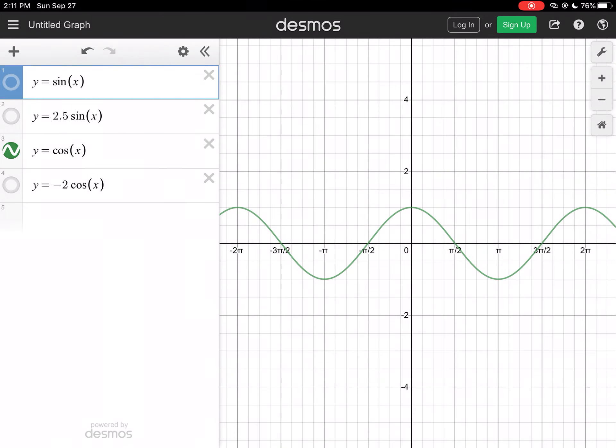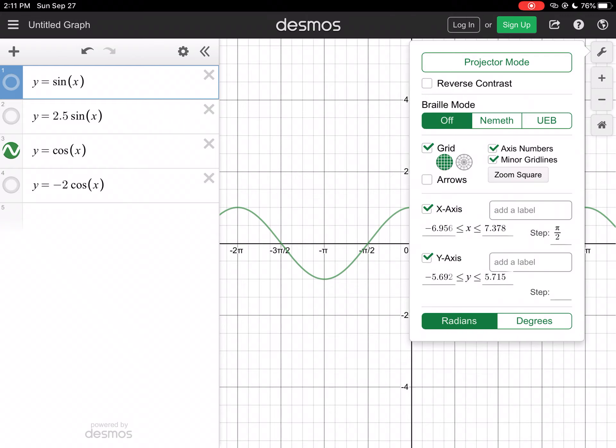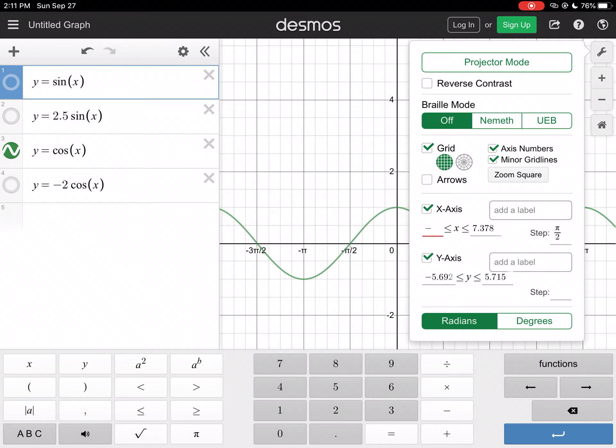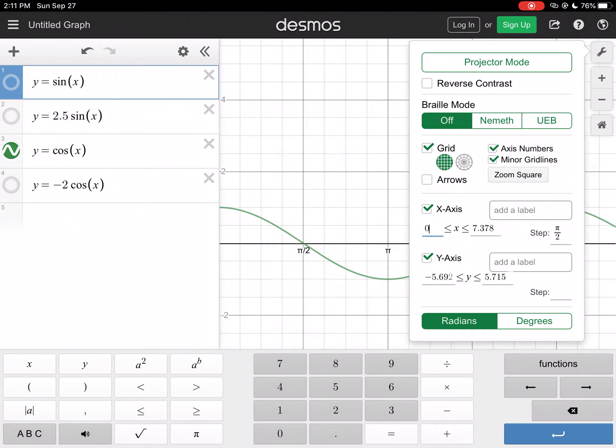I'm going to hide what I did before. I'm going to click on the wrench right here, and I want my x-axis to go from zero because I'm only doing one period, and then I'm going to change that to 16π.